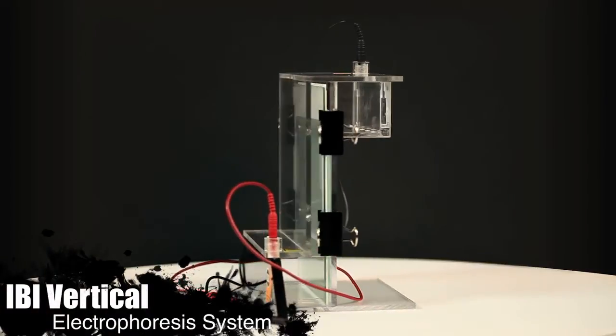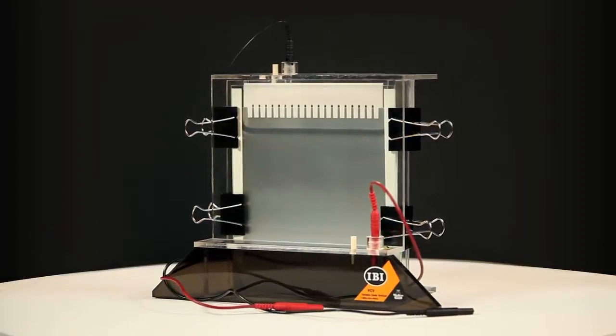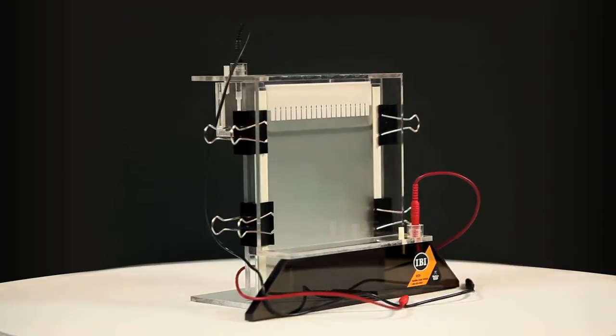The IBI Scientific Variable Comb Vertical Electrophoresis System is designed for high resolution and rapid analysis of protein and nucleic acid samples in an 18 x 22 cm format.